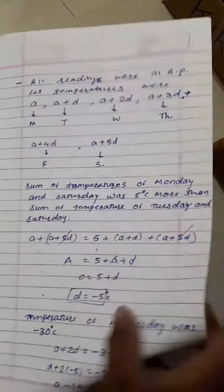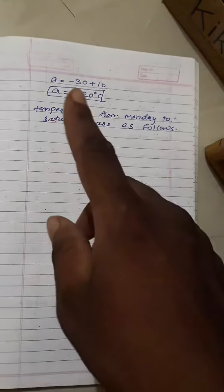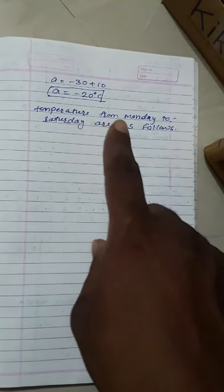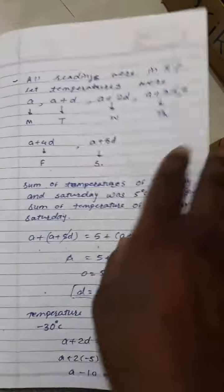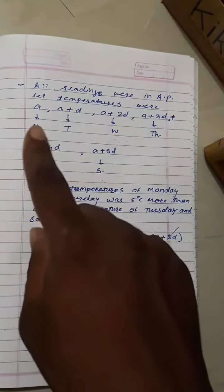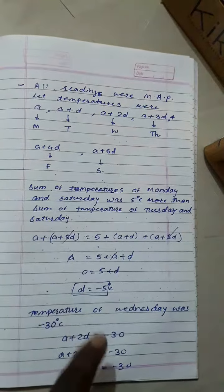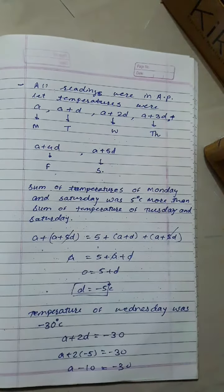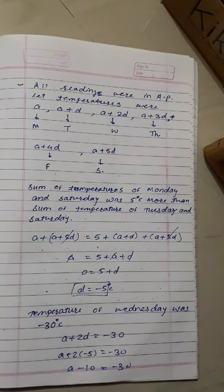So we get A equals minus 20 degrees Celsius. The temperatures from Monday to Saturday are calculated using A equals minus 20 and D equals minus 5.